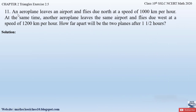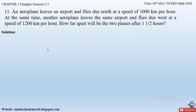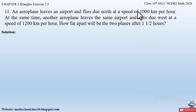Now quickly let us begin. Question number 11 from exercise 2.5, chapter 2 Triangles says: an aeroplane leaves an airport and flies due north at a speed of 1000 kilometers per hour. At the same time another aeroplane leaves the same airport and flies due west at a speed of 1200 kilometers per hour. How far apart will the two planes be after one and a half hours?